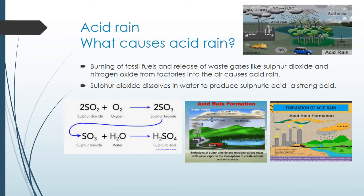Dear students, acid rain is that rain which contains a small amount of acids formed from acidic gases — sulfur dioxide and nitrogen oxides — present in polluted air. Burning of fossil fuels and release of waste gases like sulfur dioxide and nitrogen oxides from factories into the air causes acid rain. Sulfur dioxide dissolves in water to produce sulfuric acid, a strong acid.